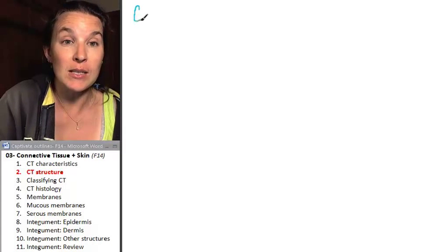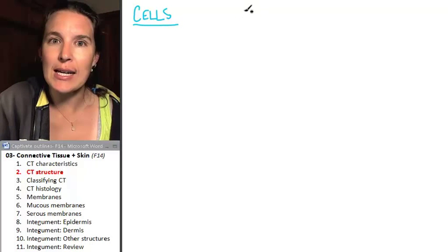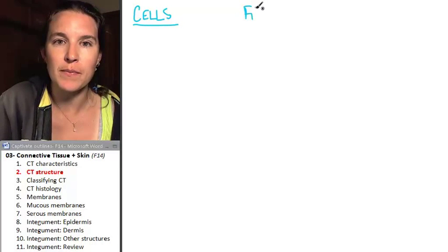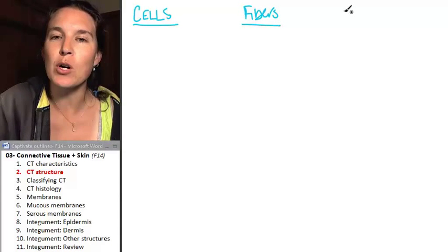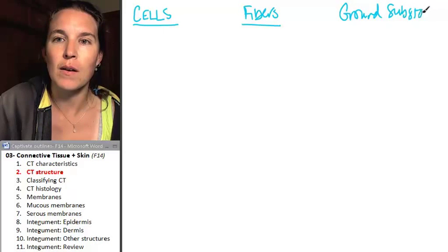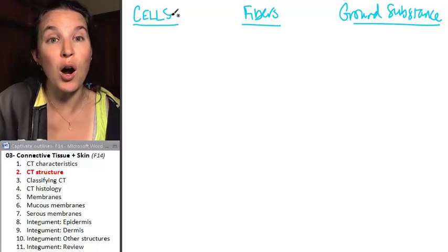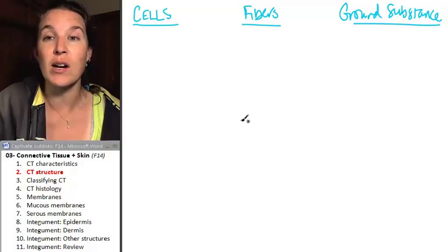We're going to need some cells, right? We're going to need some fibers, right? And then we're going to need some ground substance. And this is because connective tissues are cells in a matrix of fibers and ground substance.